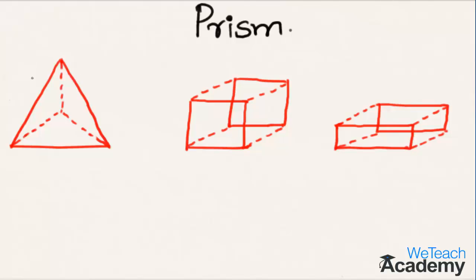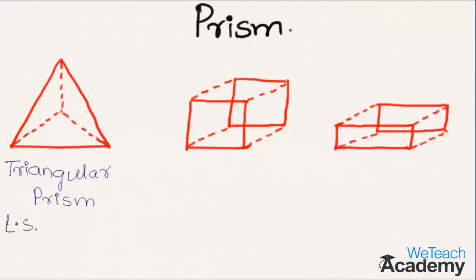Coming to the first prism, where the base is in the shape of a triangle — such a prism is called a triangular prism. The number of lateral surfaces of a prism equals the number of sides of the base. Here the base has three sides, so the triangular prism has three lateral surfaces.